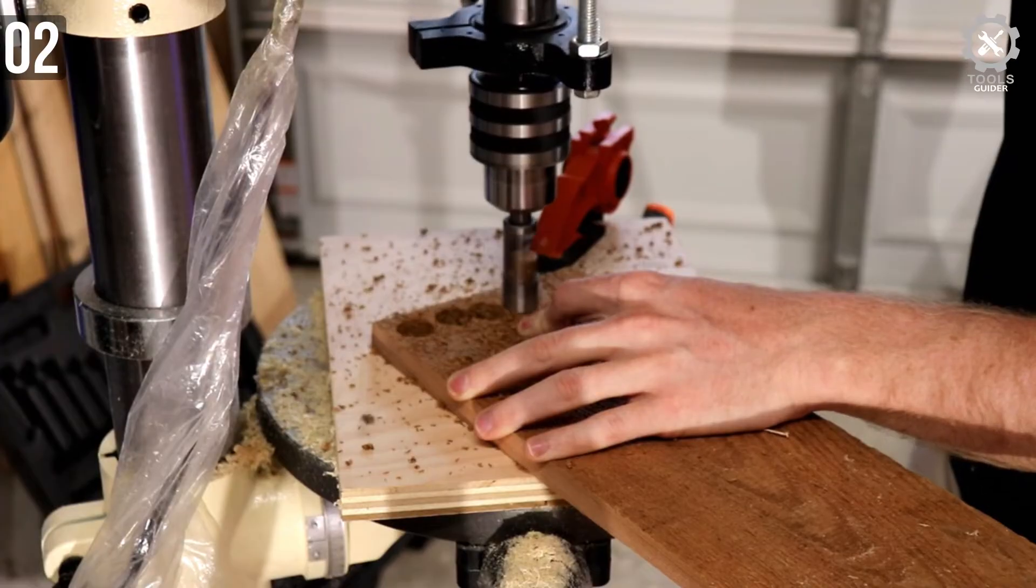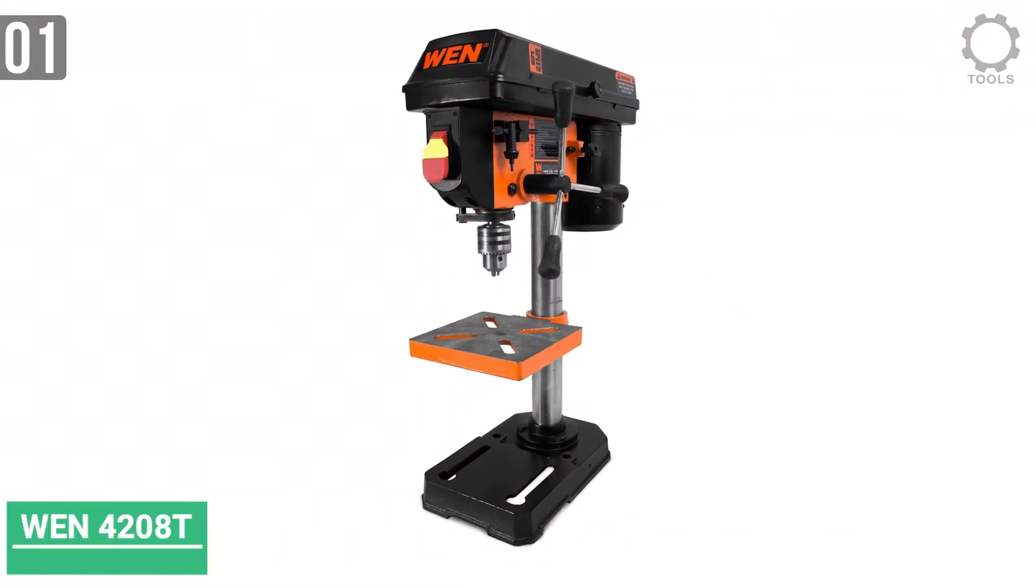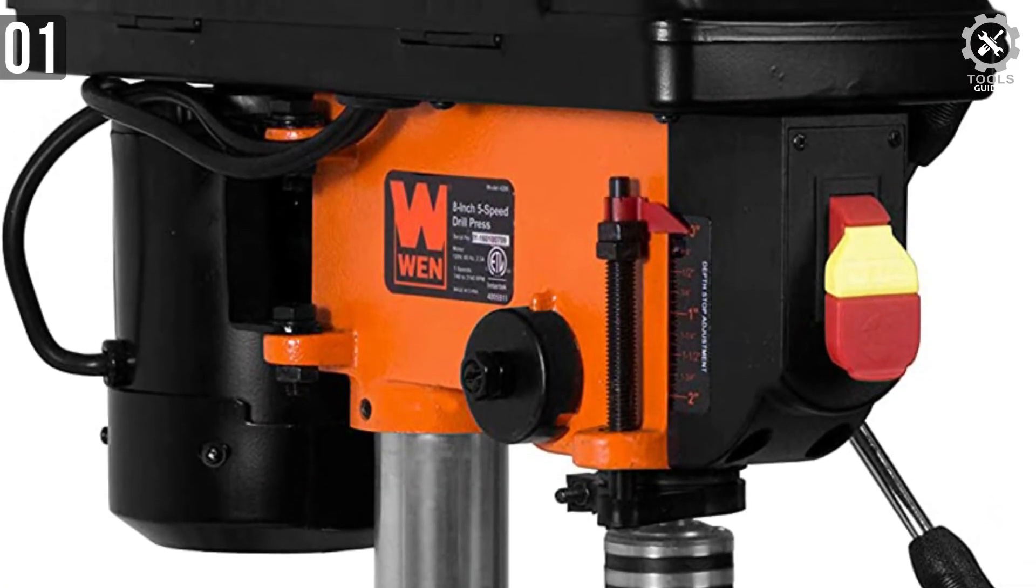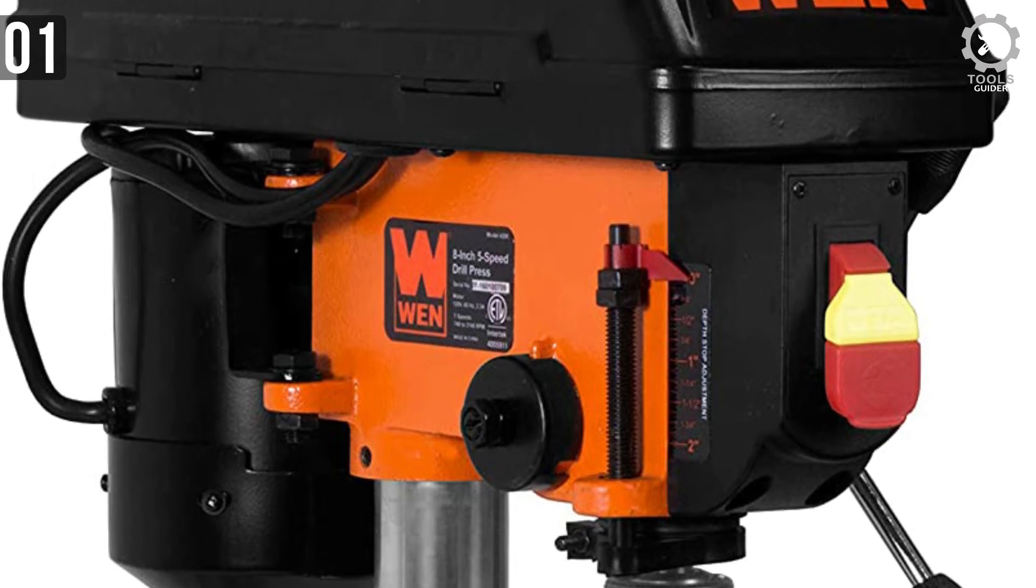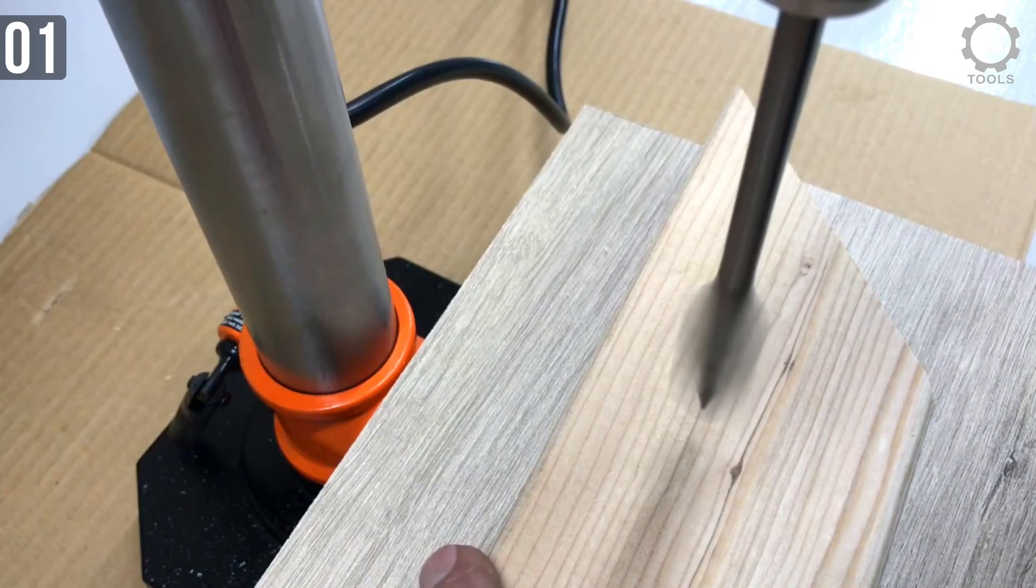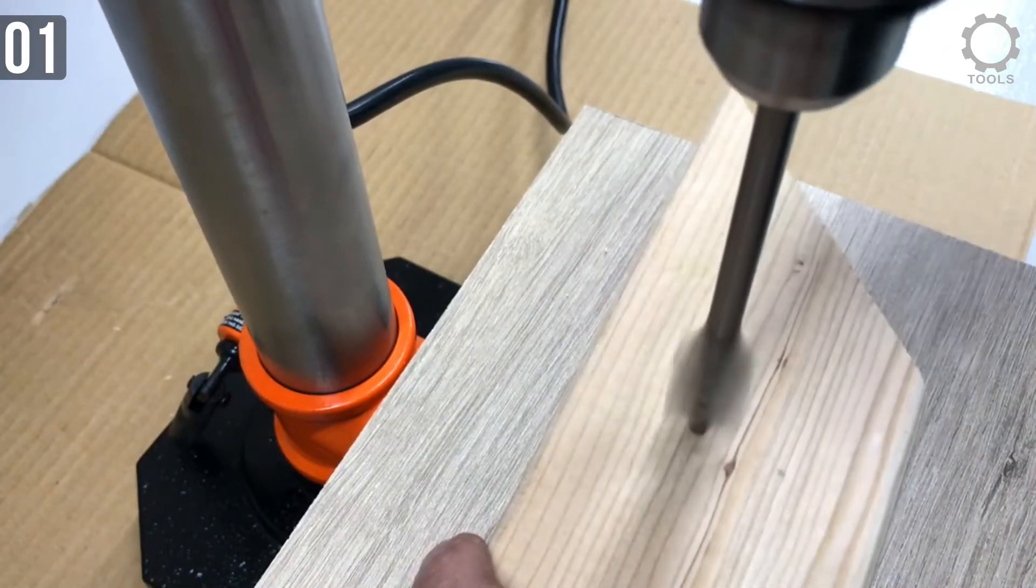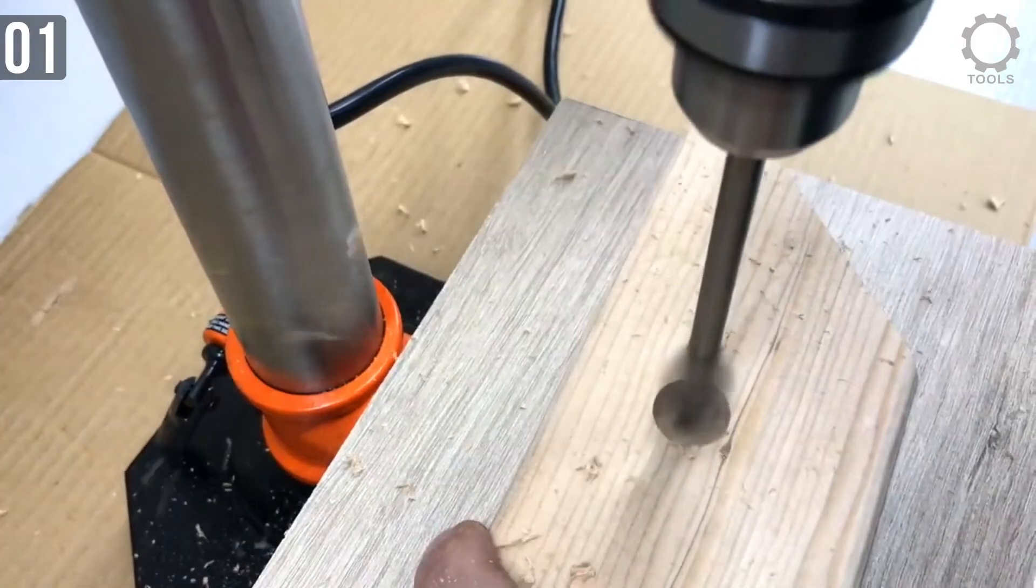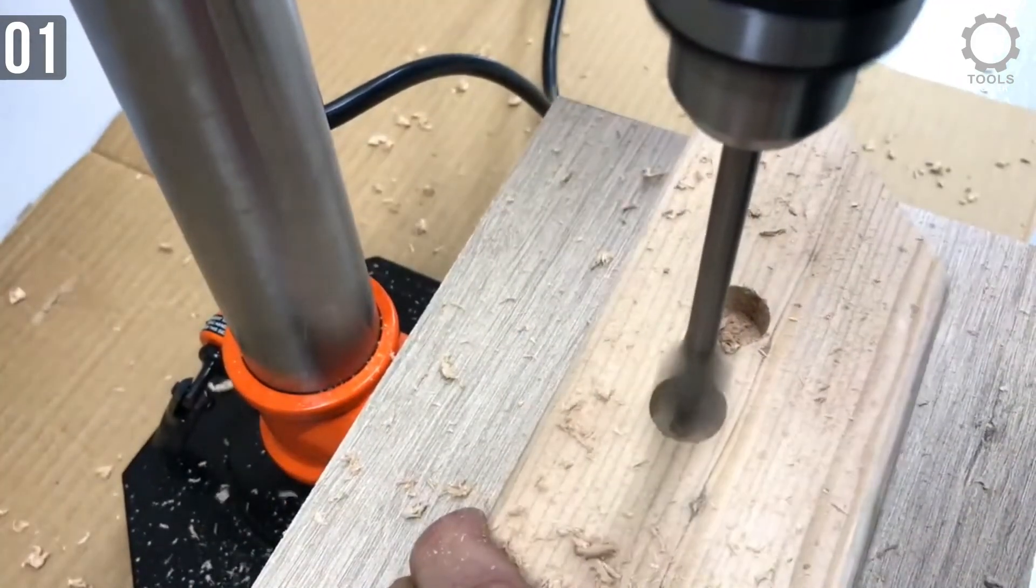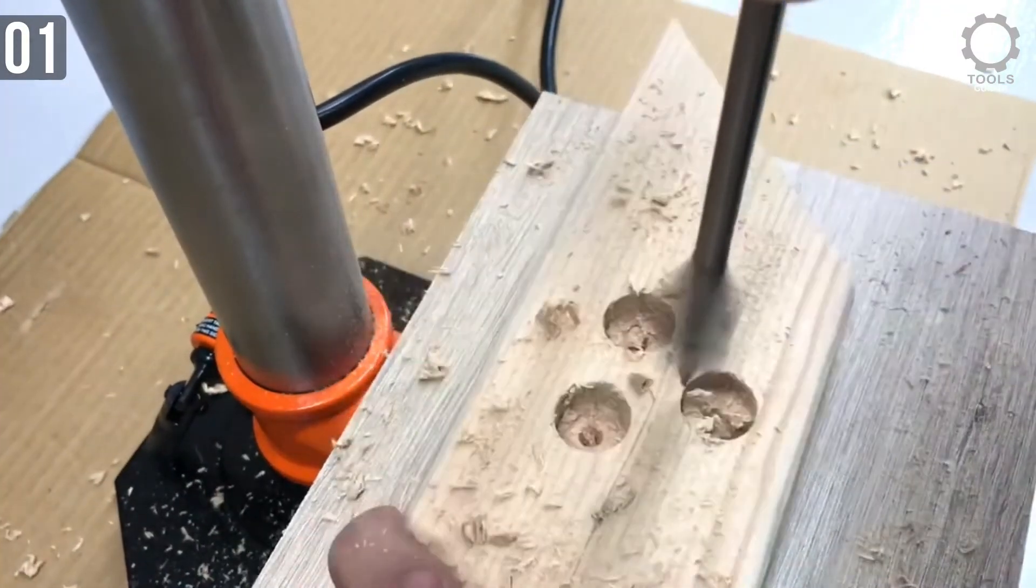Number one: WEN 4208 8-Inch Benchtop Drill Press. WEN 4208 features a powerful induction motor with ball bearing construction for extended life and better performance at high speeds. A 1/2 inch chuck makes it possible to use a variety of bits. A work table that can bevel up to 45 degrees to both left and right, height adjustable 6.5 inch by 6.5 inch cast iron work table, and variable speed settings: 620, 1100, 1720, 2340, 3100.